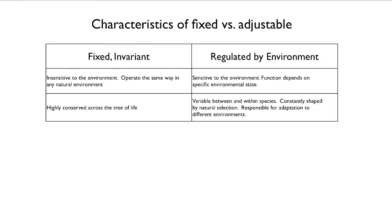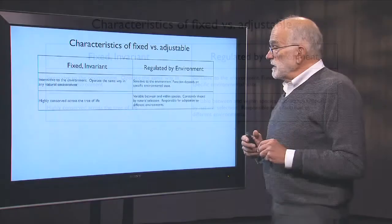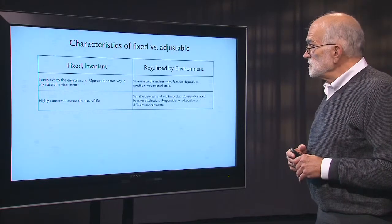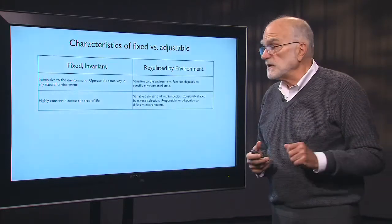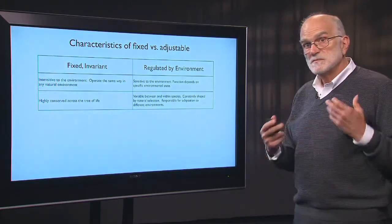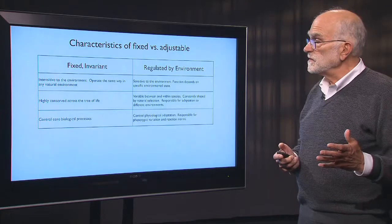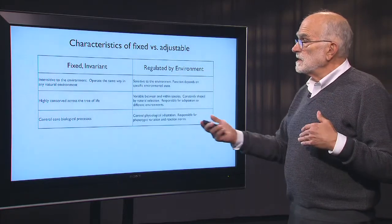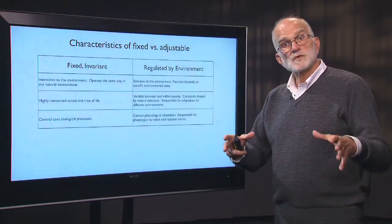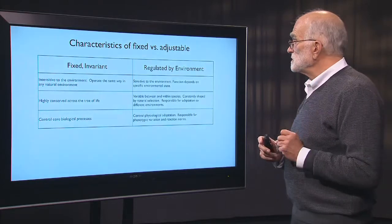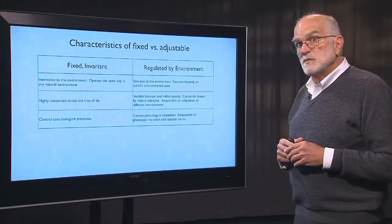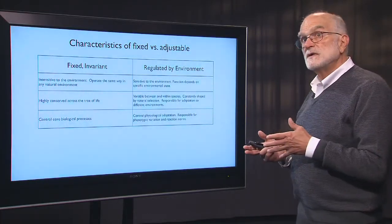Interestingly, the fixed reactions are often highly conserved right across the tree of life. Intermediate metabolism in bacteria and humans is actually fairly similar. Adjustable reactions vary within and between species; they are constantly being shaped by natural selection and are responsible for adaptation to different environments.